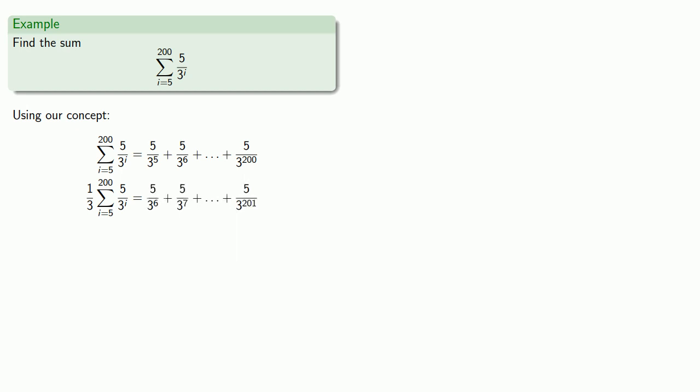If I subtract, everything but the first term of the first series and the last term of the second series is going to cancel out. And so I'll have 2 thirds the sum equaling a difference. And so I know the sum of the series itself.